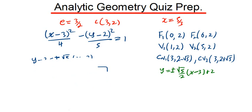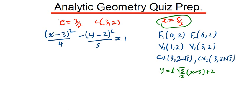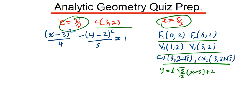We already have the center given. We were also already given one directrix. Using all the details — focus, vertices, co-vertices, center, eccentricity, directrix, and equations of the asymptotes — you can graph the hyperbola. That's how you answer question 8.